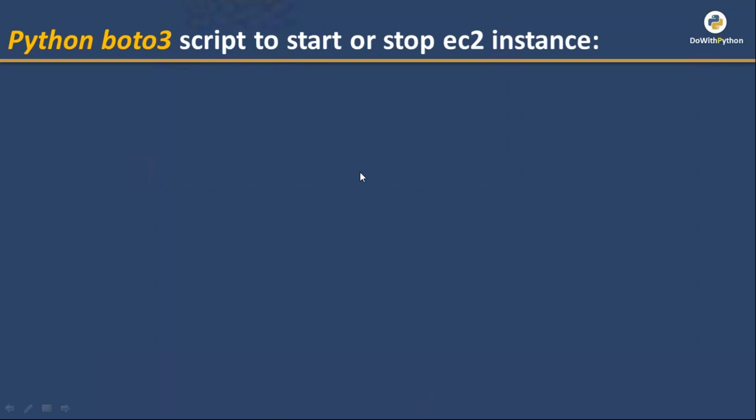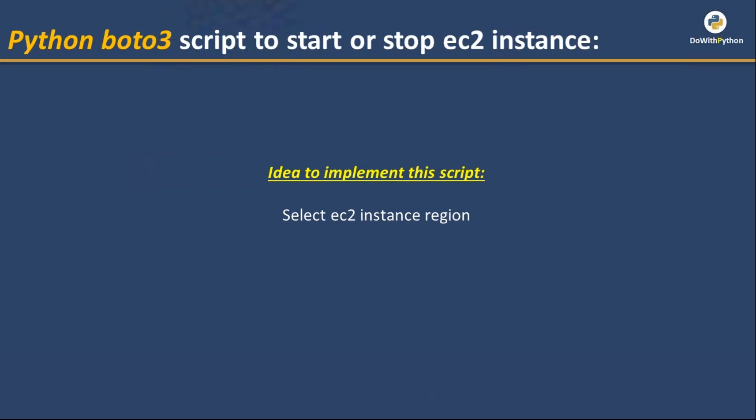Before writing any script, you must have some idea of what the purpose of the script is and how you are going to implement it. Our requirement is to write a Python script with Boto3 to start or stop an EC2 instance. The first and foremost thing is you need to select the EC2 instance region, because EC2 instances are region-specific.